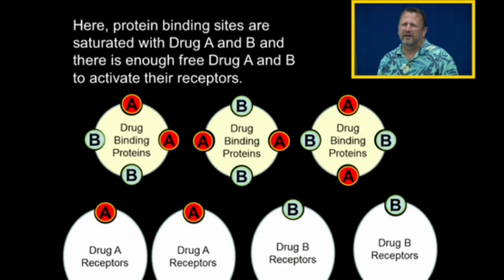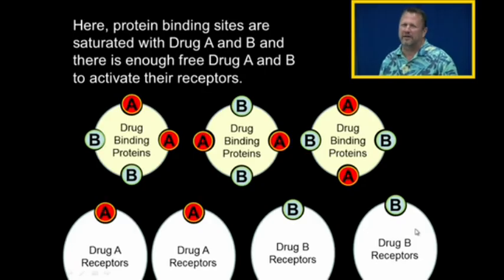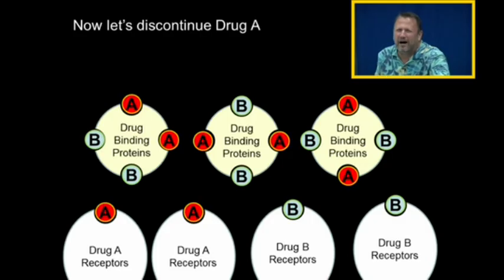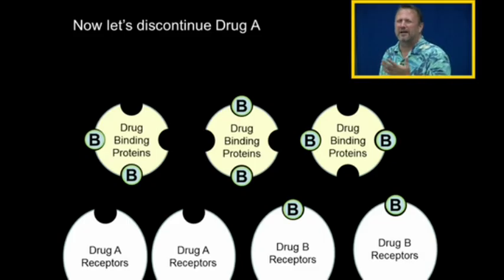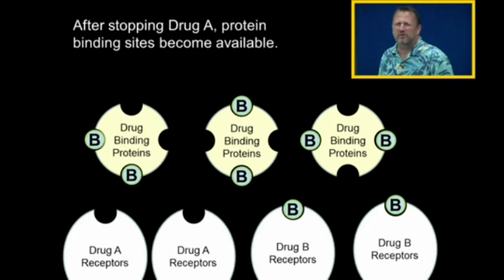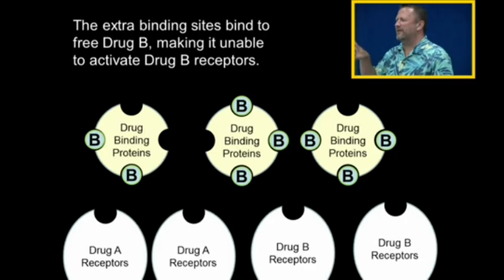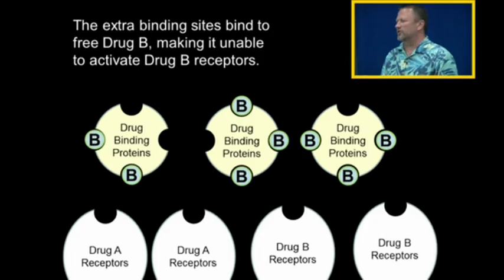Here we have Drug A and Drug B, and the protein binding sites are saturated with both. There's plenty of free Drug A to activate Drug A receptors and plenty of Drug B to activate Drug B receptors — this person is on Dilantin and Coumadin, and their levels are perfect. Now we stop Drug A — we stop the Warfarin. After time, the Warfarin is no longer in the body because it was eliminated. By stopping Drug A, protein binding sites become available, and those sites will pull Drug B out of its free state so it can't activate receptors. This is why stopping something as simple as a blood thinner can cause somebody to have a seizure if they're taking Dilantin.